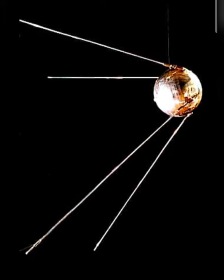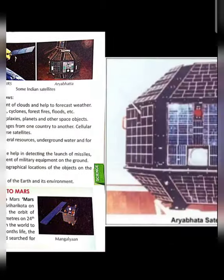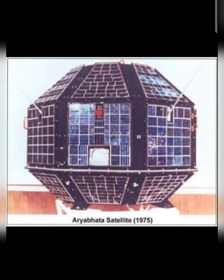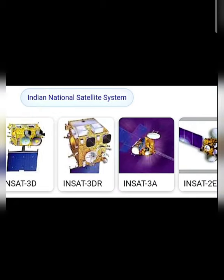This is the image of Sputnik 1, launched by Russia on 4th October 1957. This is Aryabhata, launched on 19th April 1975. These are the real images of these satellites. We will also discuss names like the INSAT — Indian National Satellite System — series, including INSAT 3D, INSAT 3DR, INSAT 3A, and INSAT 2E.